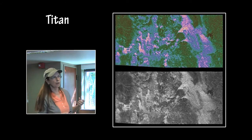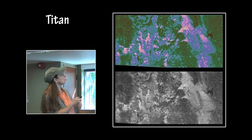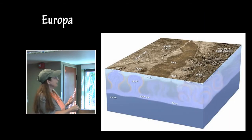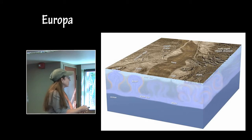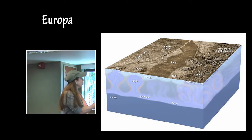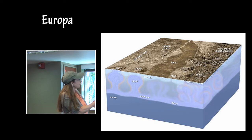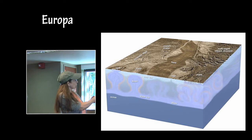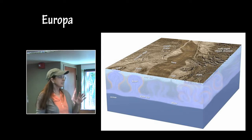The brighter areas represent the more complicated, rough, broken terrain, and the green represents the smooth areas. Here is a graphic of Europa that shows underneath the surface how the cold water, the warm ice, the dikes, the diapir, the ocean, and how those features below the surface look and what you see above the surface. So maybe here we have warm rising water or slush that is producing that dome, so look for those kinds of things.